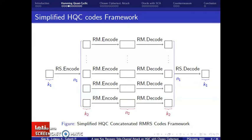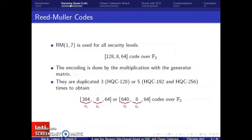To understand how the concatenated codes work, we start with a message of length K1, which is the dimension of the external code, here the Reed-Solomon code. We obtain a codeword of length N1 after the Reed-Solomon encoding. The size of this N1 element is exactly the dimension of the internal code K2. Each element can be encoded independently with the internal code, here the Reed-Muller code, to obtain a vector of size N1 times N2.